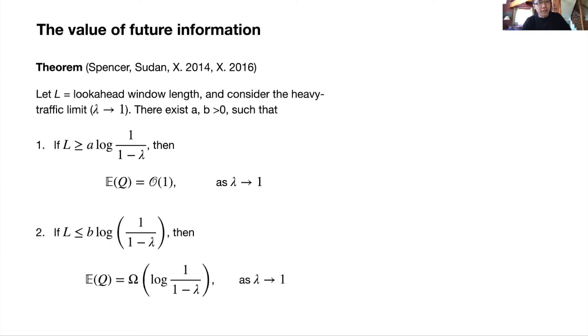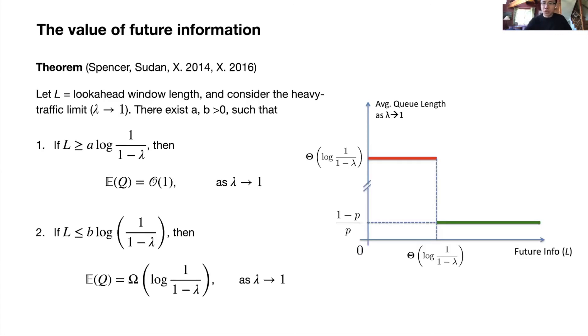The question is, what does that do to our system? How can we leverage information for better scheduling and better performance? Here's a result that we obtained. If we look at L as the length of that look-ahead window, you can think of that as time. And let's look at the heavy traffic limit as the system load lambda goes to one, namely the system is heavily loaded. Then there exists two constants a and b such that the following is true. First, if the look-ahead window is sufficiently long, and in particular longer than a times log 1 over 1 minus lambda, then we see that the expected queue length in steady state will converge to a constant in the heavy traffic limit. If on the other hand L is short, and in particular just slightly shorter than b times log 1 over 1 minus lambda, then the queue length not only does not converge to finite constant but actually blows up to infinity at roughly the same rate.